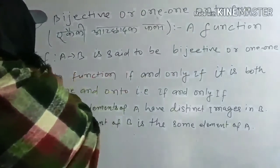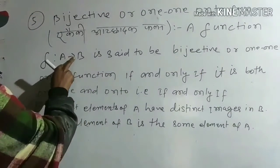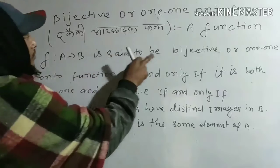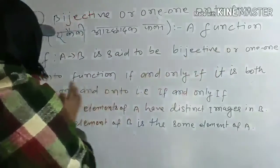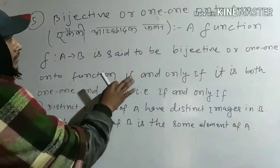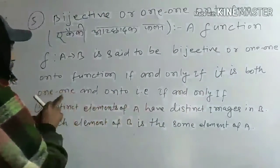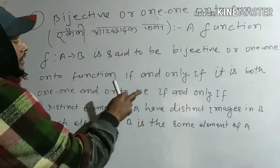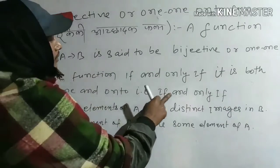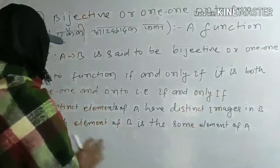A function f: A to B is said to be bijective or one-one-onto function if and only if it is both one-one and onto. That is, if and only if (yadhi aur kewal yadhi).